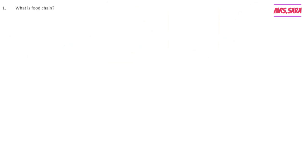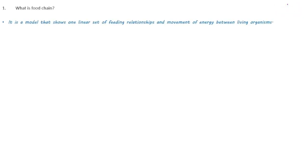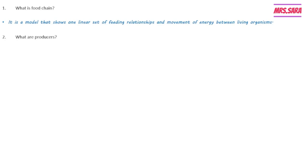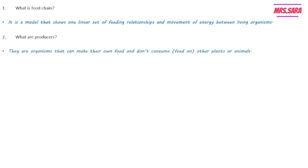Let's review: what is the meaning of food chain? A food chain is a model that shows one linear set of feeding relationships and movement of energy between living organisms. What are producers? Producers are organisms that can make their own food and don't consume or feed on other plants or animals.